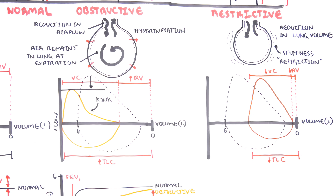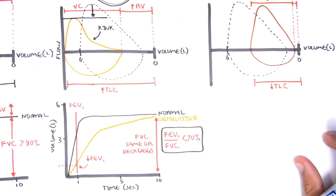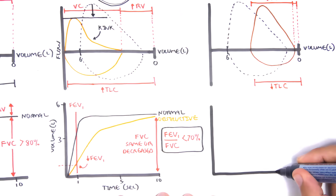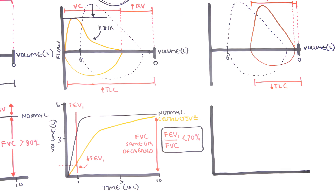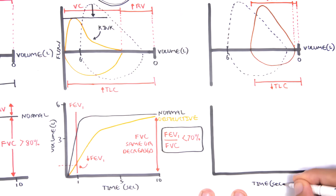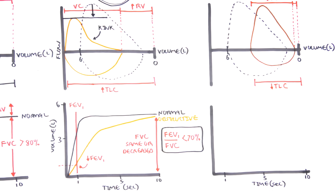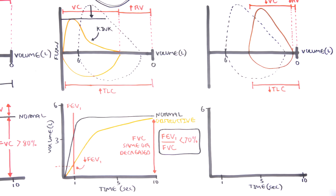What about the forced expiratory volume in the first second? Let's look at the other graph again, with time on the x-axis in seconds 1 through 10, and lung volume on the y-axis, which in a normal adult male goes up to 6 liters.